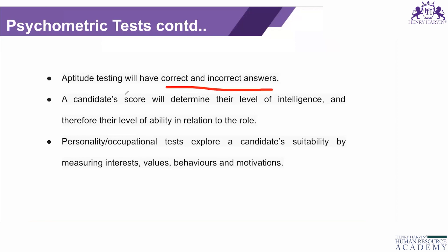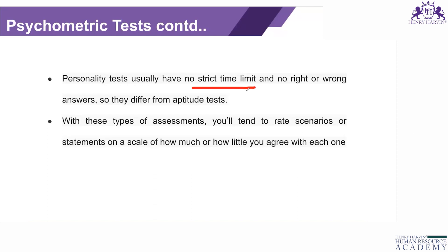As mentioned, aptitude testing will have correct and incorrect answers, and a candidate's score will determine their level of intelligence and ability in relation to the role. Now, for personality and occupational tests — these explore a candidate's suitability and include interest tests, values, behavior, and motivation tests. Personality tests usually have no strict time limit and no right or wrong answers, because every individual is different and can behave differently.